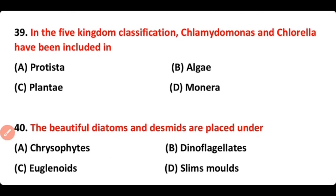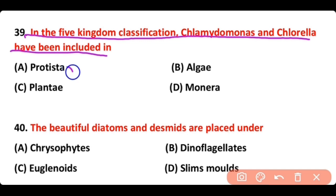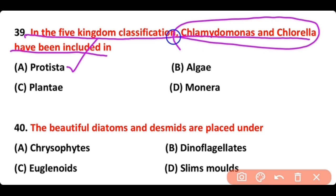Question number 39: In five-kingdom classification, Chlamydomonas and Chlorella have been included in — Protista, Algae, Plantae, or Monera? The correct answer is option A. Chlamydomonas and Chlorella are both present in Protista.